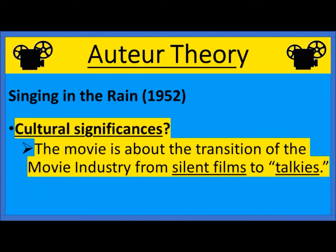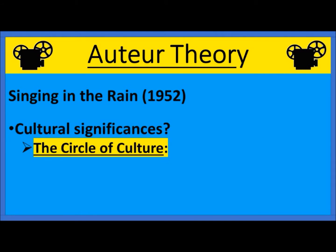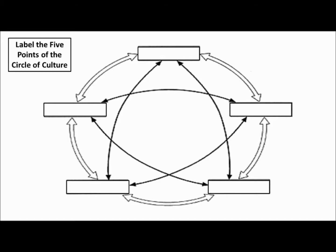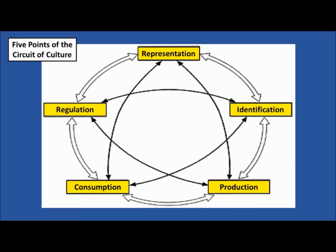Next we had a classroom discussion about the cultural significance of the film, because the movie is about the transition from silent films to talkies. Then we went over how we measure cultural significance through the circle of culture, and the teacher gave us the diagram.